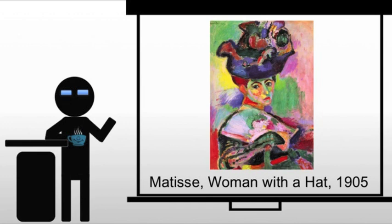Art critics looking at pieces like this, looking at the use of color, associated it with a very primitive sort of approach — this idea that the Fauves are wild beasts without the necessary civilization or the necessary skill to use color properly.